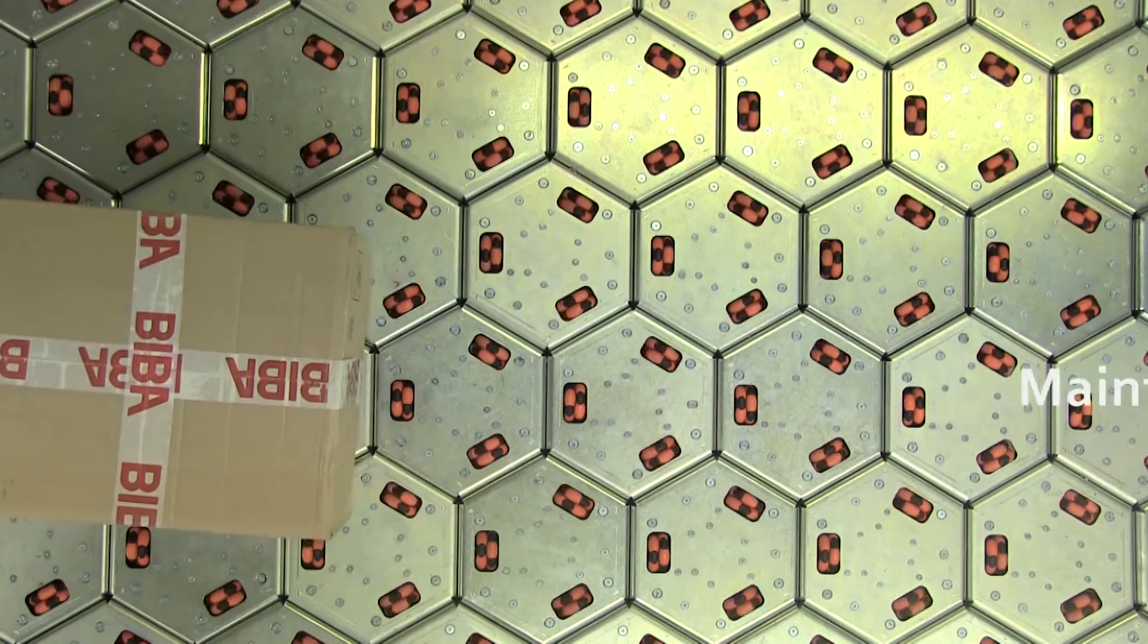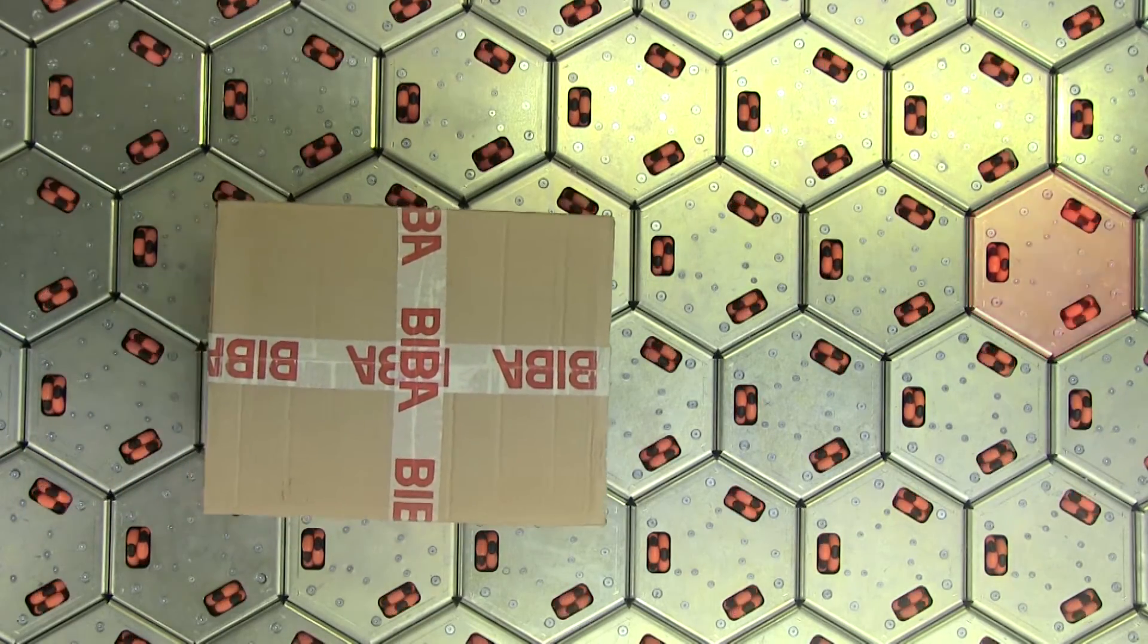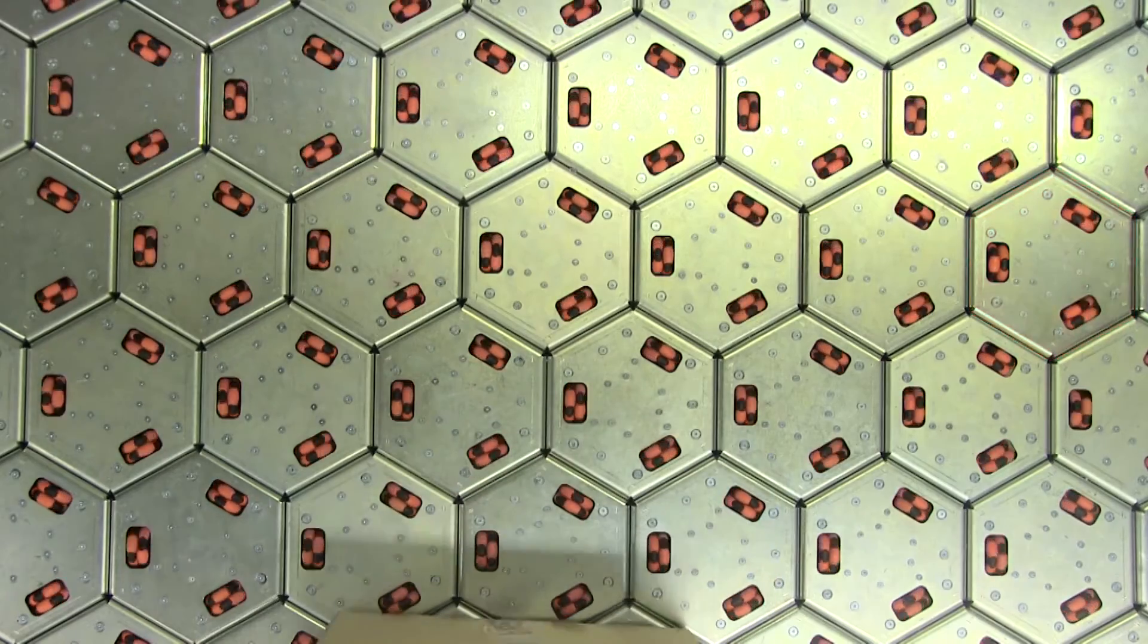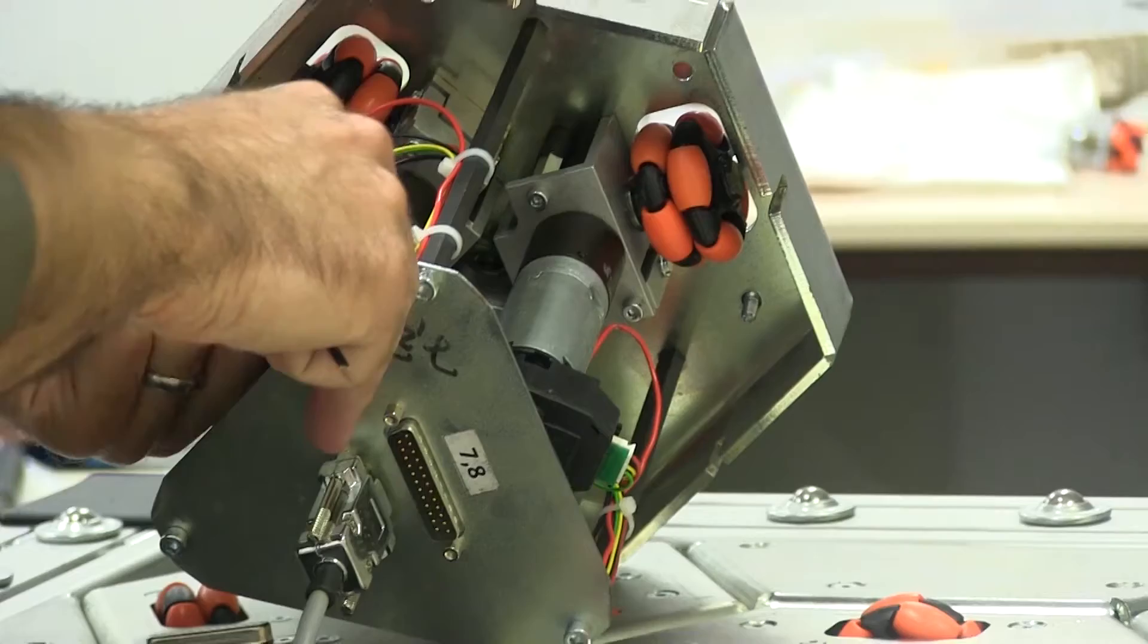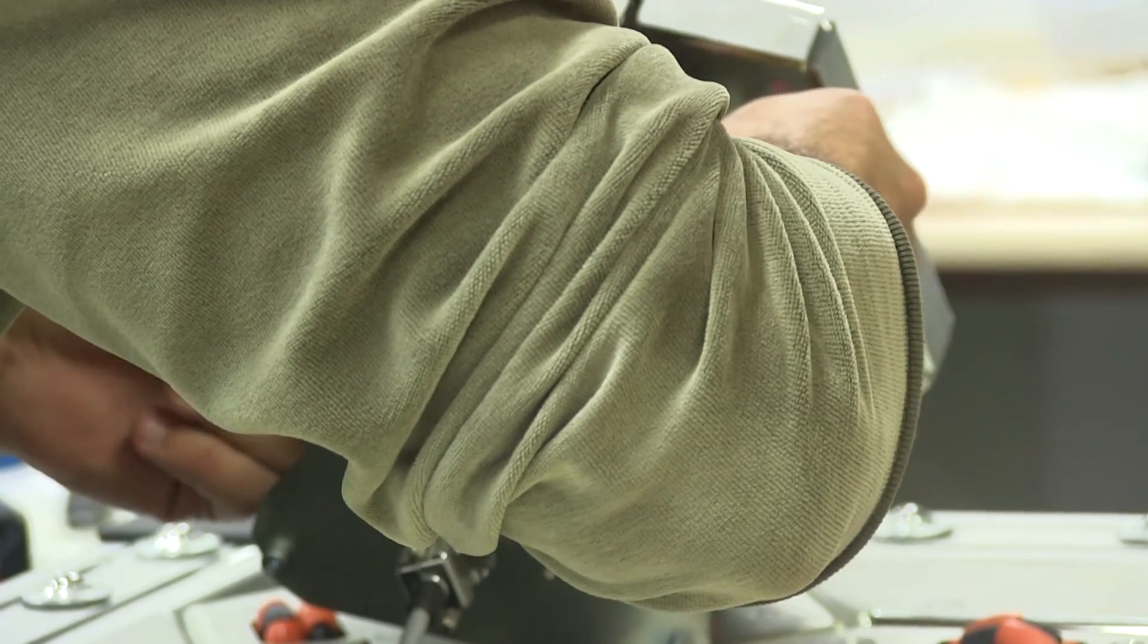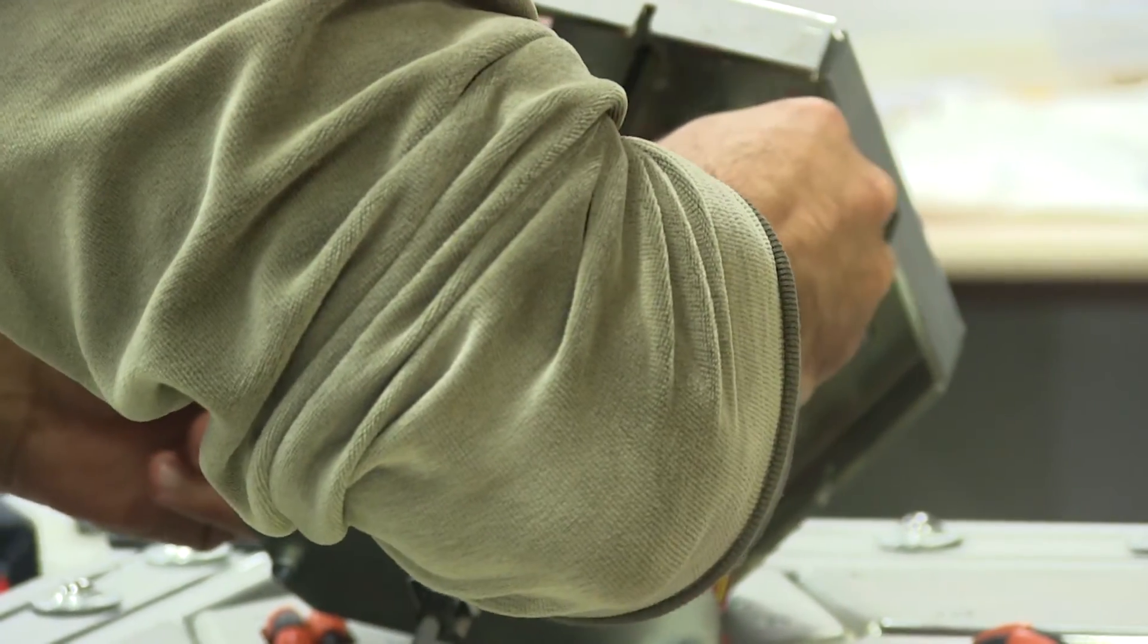Yet, if it should happen that a conveyor module is down during operation, the control system detects this. The conveyor module is deactivated and bypassed by the packages. The company's own personnel is able to replace the defective module within a few minutes and transfer it to a repair station.